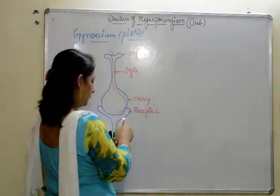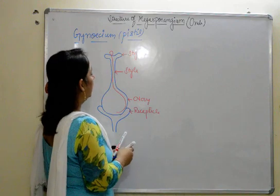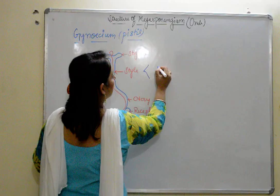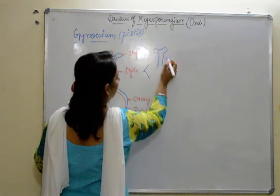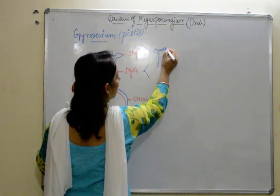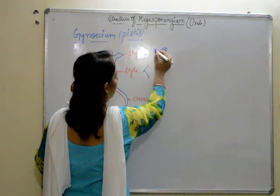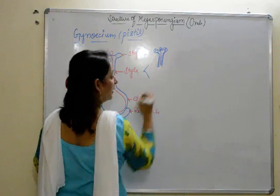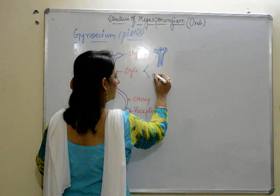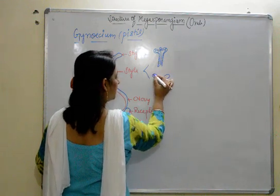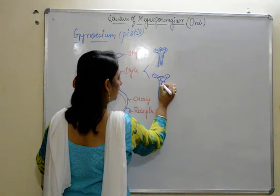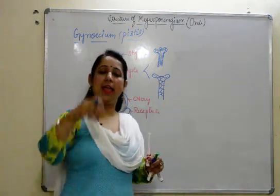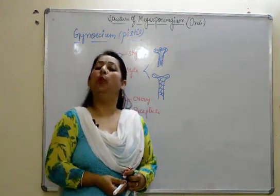The style can be of two types: it can be hollow or it can be solid. A hollow style will have cells arranged on the periphery, from where the pollen tube can easily move. In a solid style, the cells will be arranged inside the whole style. Here the pollen tube needs to make its way to move inside down to the ovule.